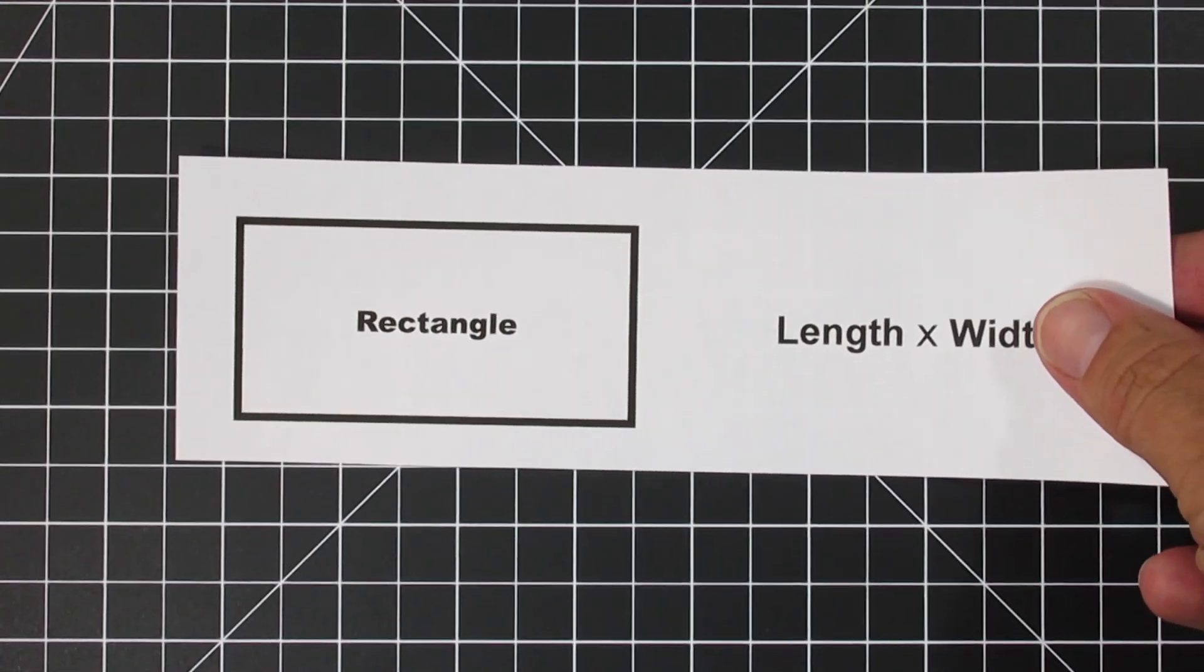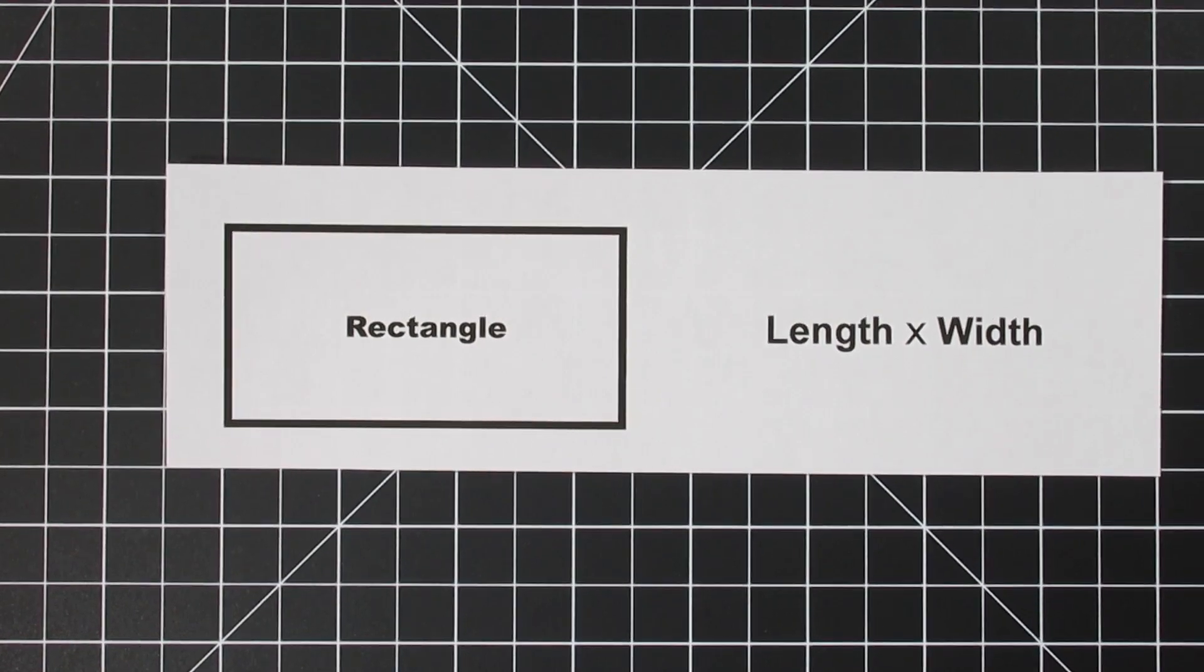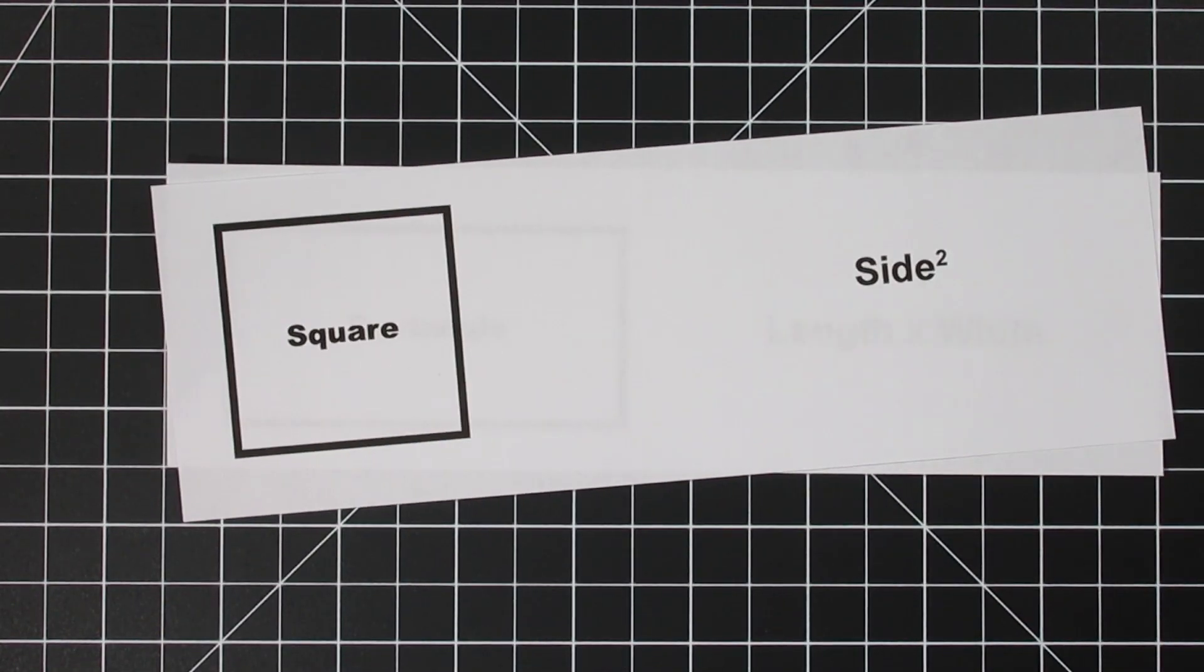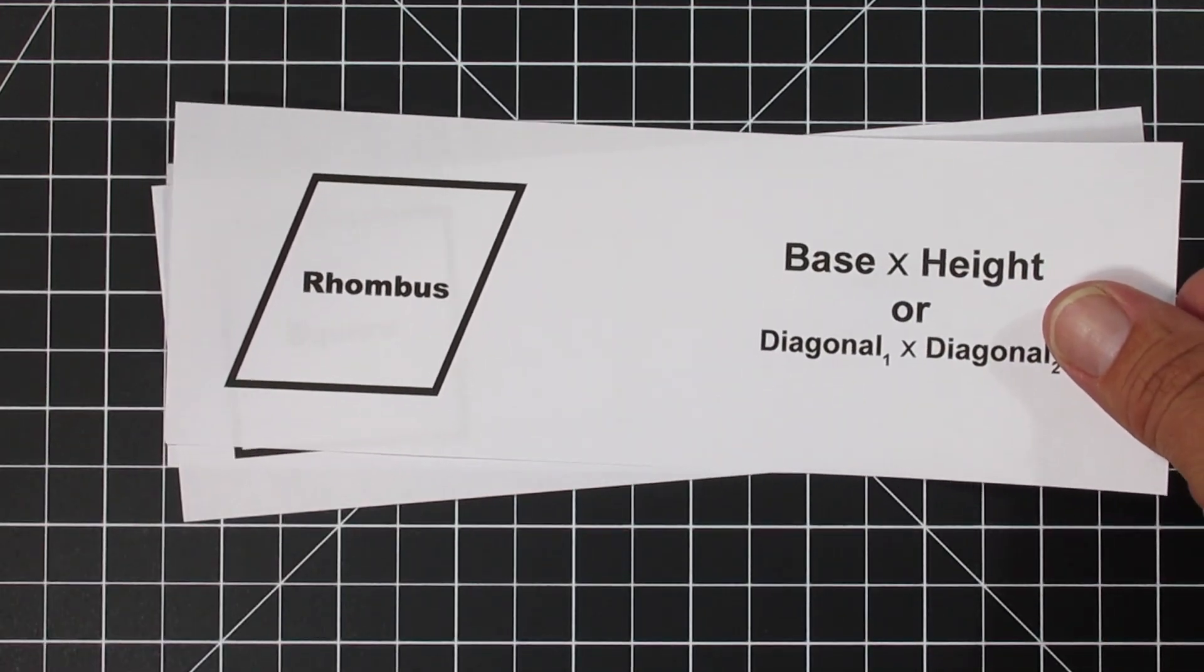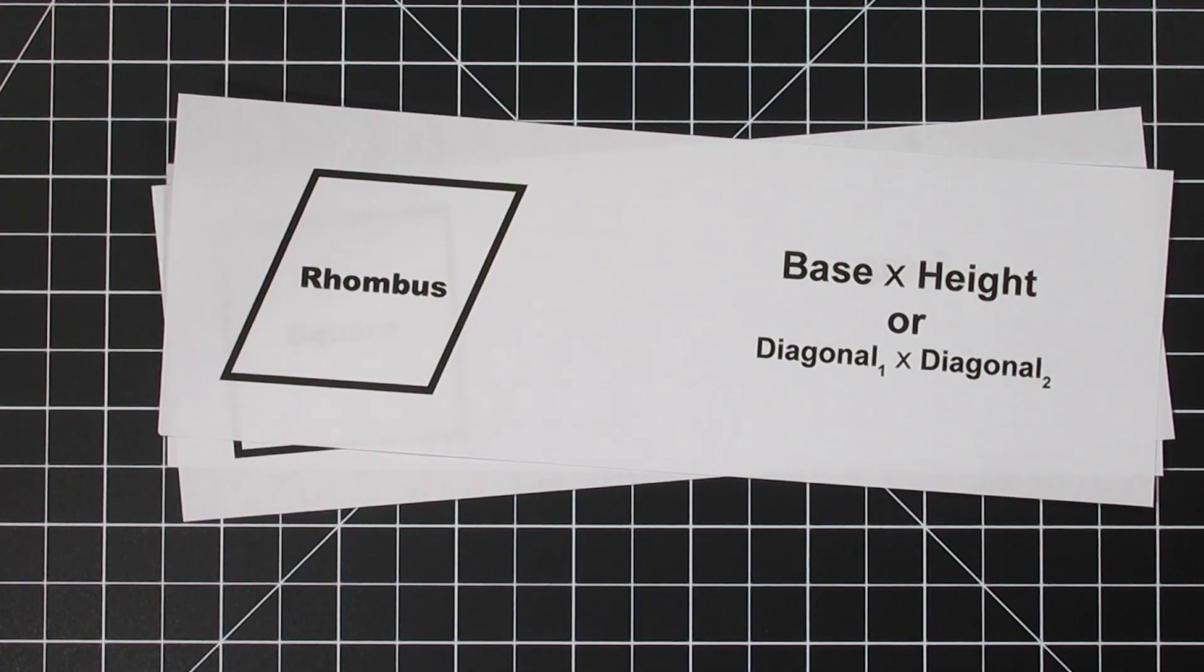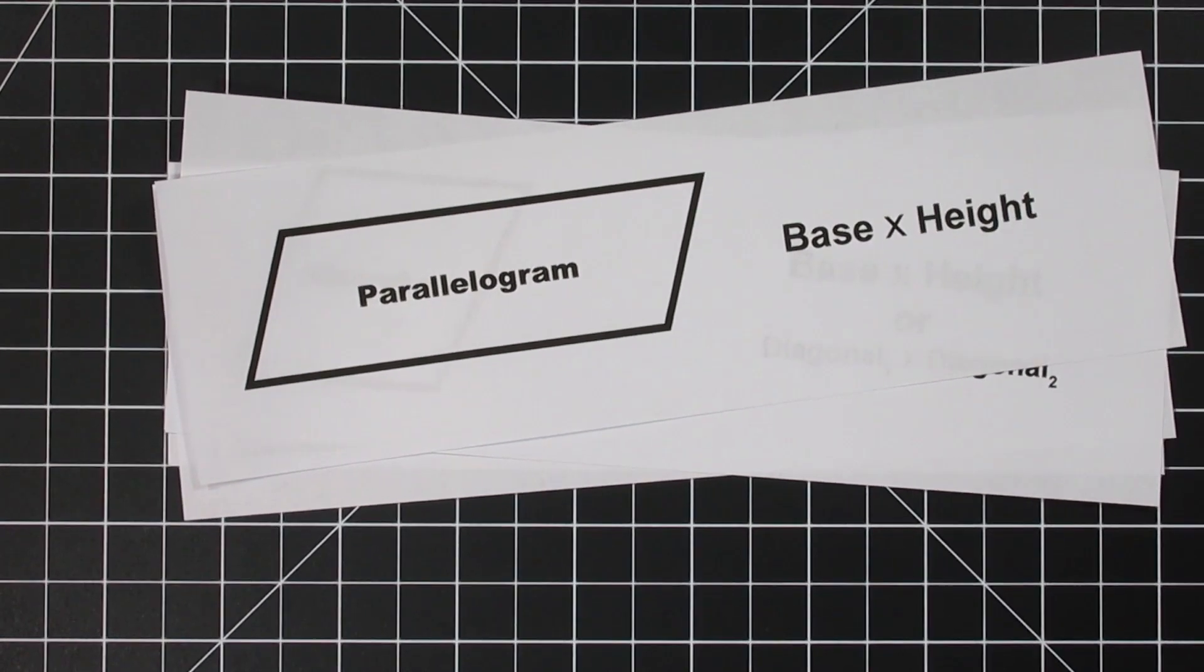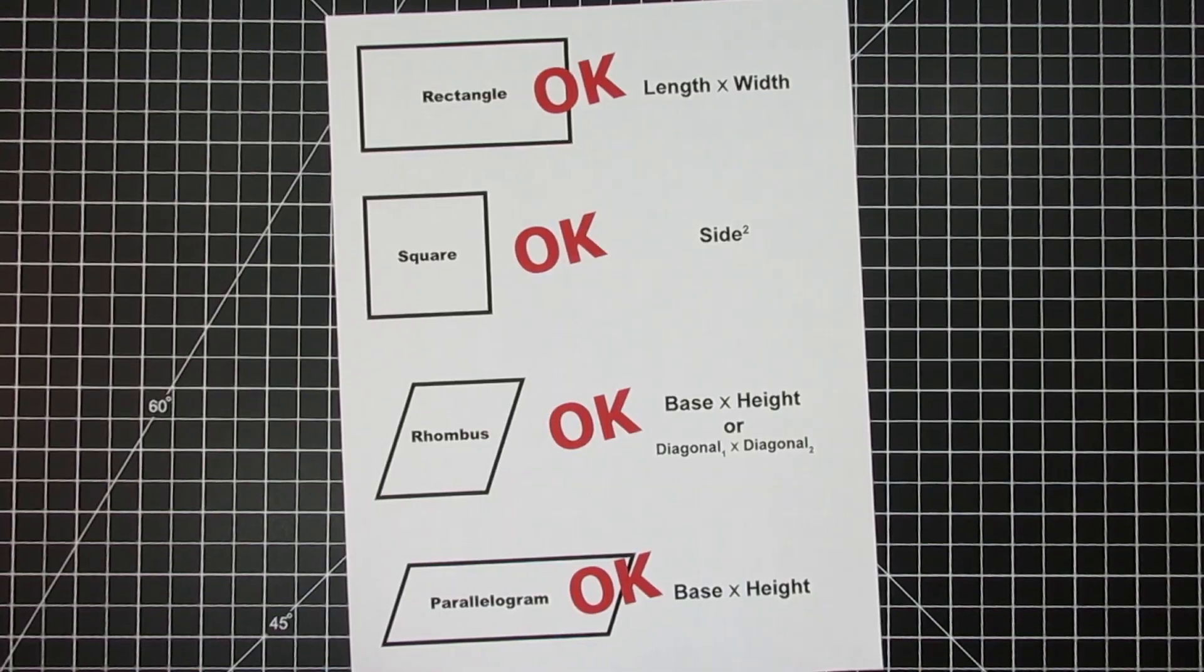If you've ever googled area of a shape you're going to see a lot of possibilities. There's length times width for rectangles, side squared for squares, base times height, or you can multiply the diagonals and divide by 2 for a rhombus, and for a parallelogram use base times height. All these are correct, but which is the best one?